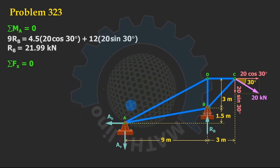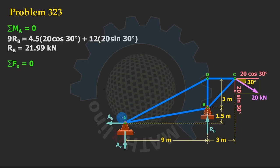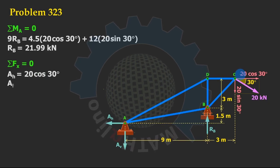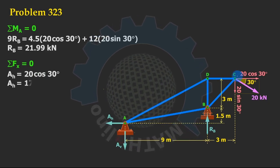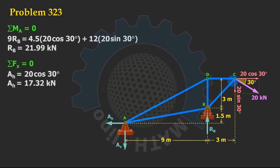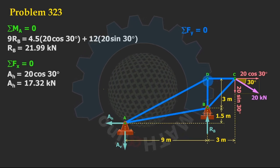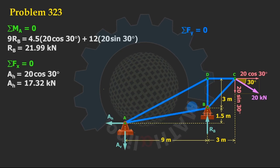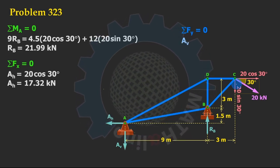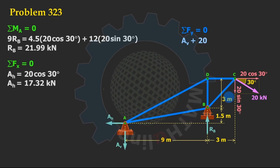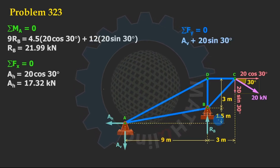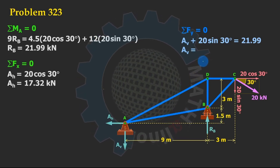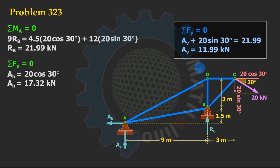For the summation of forces in the x-direction, AH to the left equals 20 cosine 30 to the right, giving us the value of AH. For summation of forces in the y-direction, we have downward AV plus 20 sine 30 equals upward RB of 21.99, and we get the value of AV.